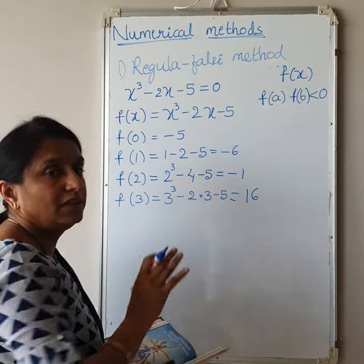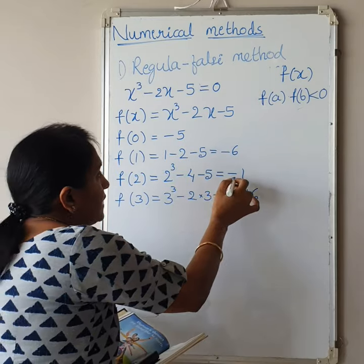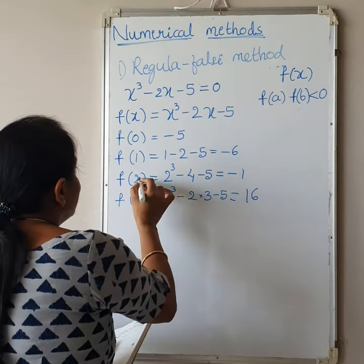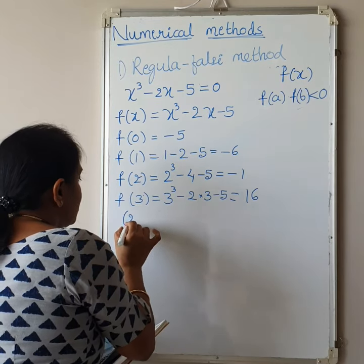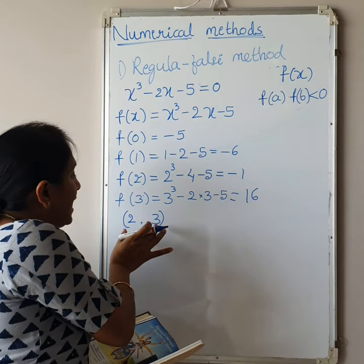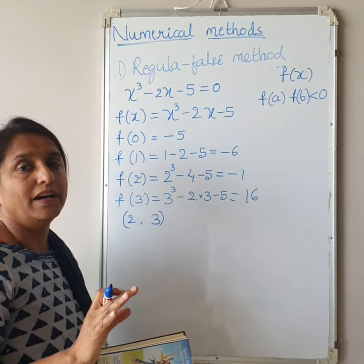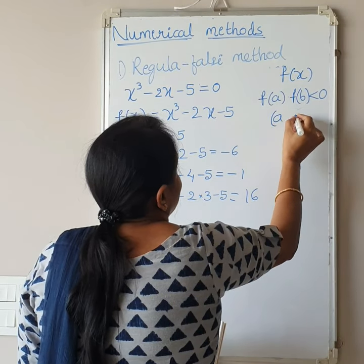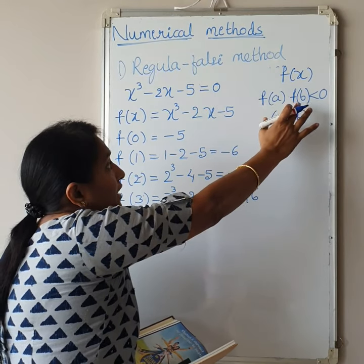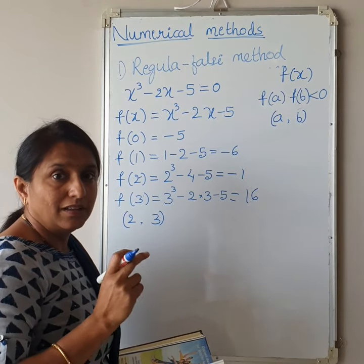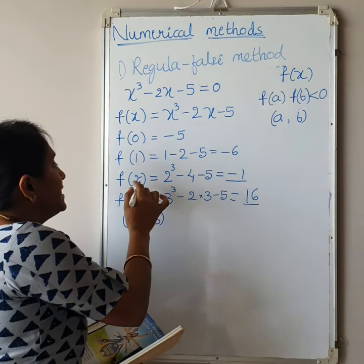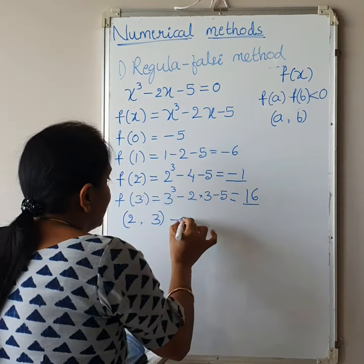Root lies in the interval [2, 3] because F(2) × F(3) is negative. So A = 2, B = 3, F(A) = F(2) = -1, F(B) = F(3) = 16. Always write the smaller value first. Now by Regula Falsi method, the formula for the first iteration is: X1 = [A·F(B) - B·F(A)] / [F(B) - F(A)].